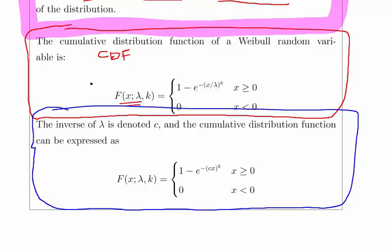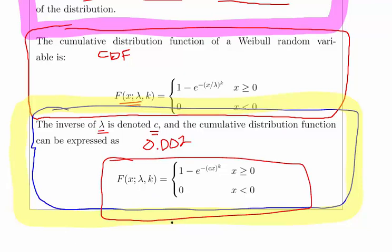In finance and medicine and engineering, each parameterization would be more suitable in different branches of science. This particular instance might be the most useful approach for financial mathematics and financial statistics. We're going to denote the inverse of lambda as c, which is 0.002, and then re-express this expression as 1 minus e to the minus cx to the power of k.